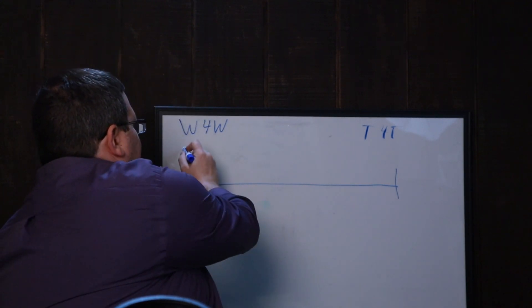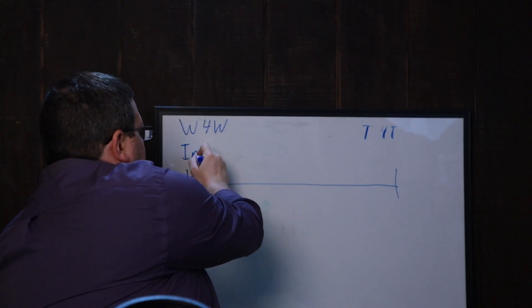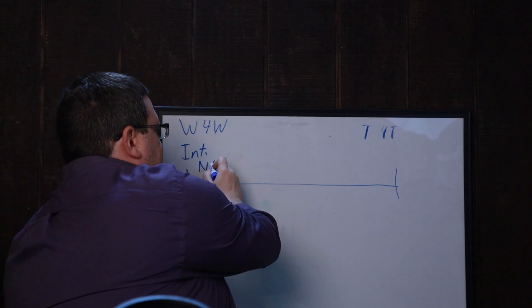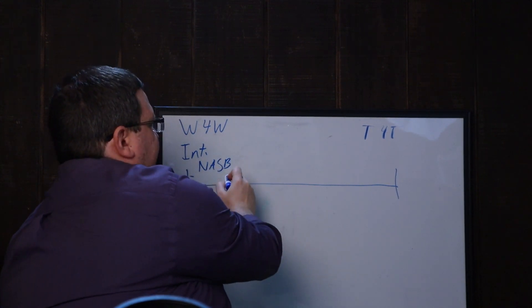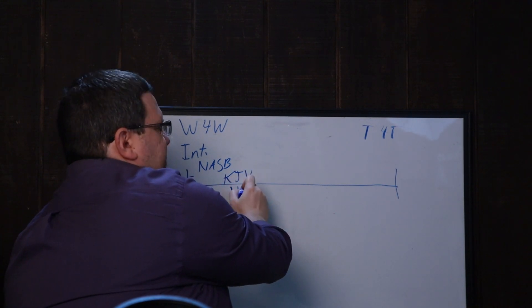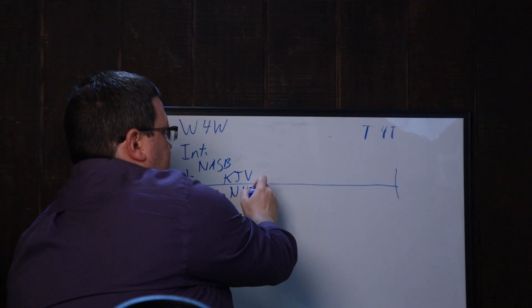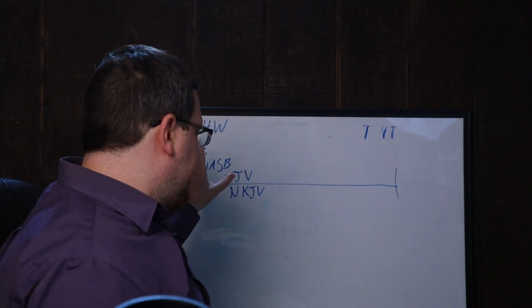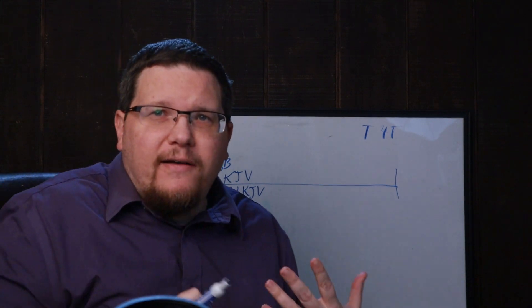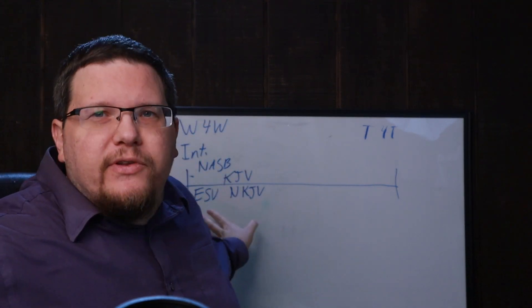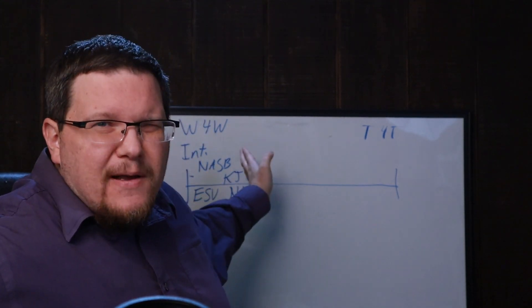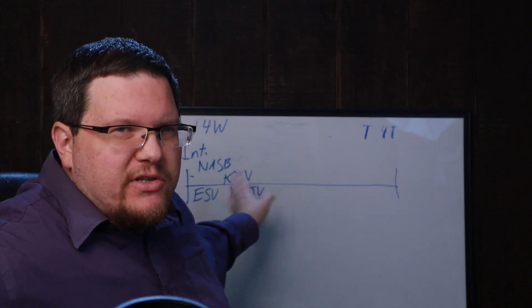Now, over here you have your interlinear, which nobody really uses. Then you have things like NASB, New American Standard Bible. You're going to have KJV over here, a little less, but New King James. Those are all going to be super literal or ESV. It's a little more literal. Now, oftentimes I use the New American Standard Bible, the NASB, because that's my favorite. That's what I kind of grew up on, and it is, apart from the interlinear, it is the most word-for-word.